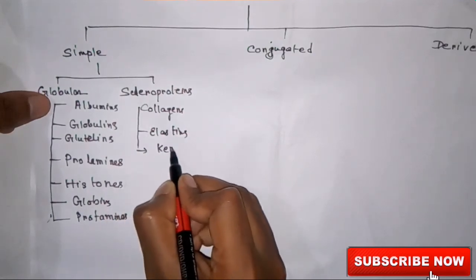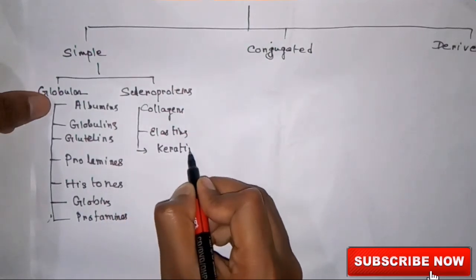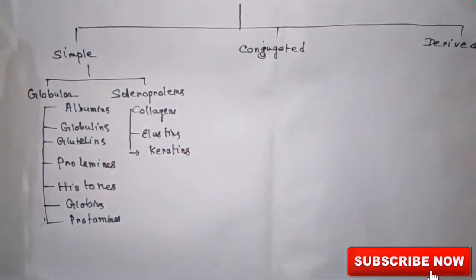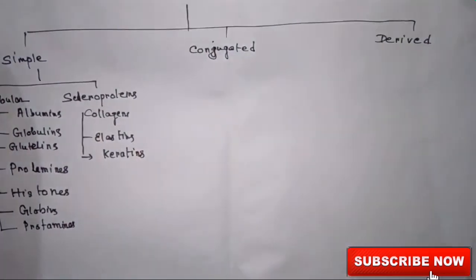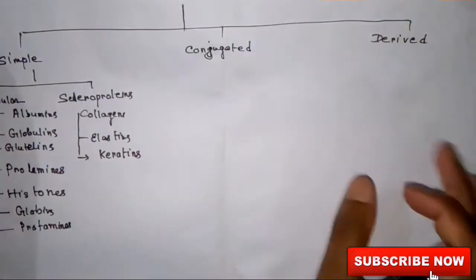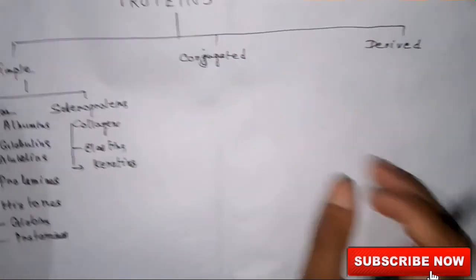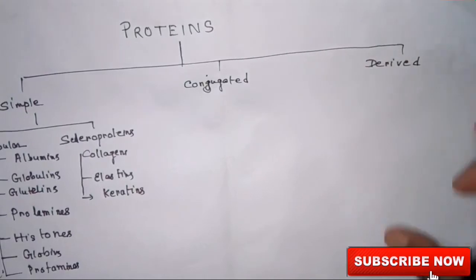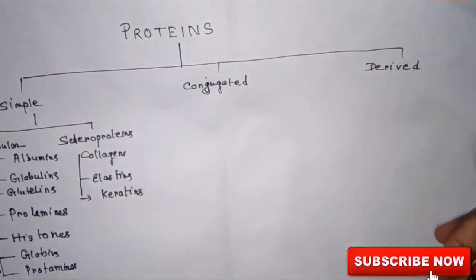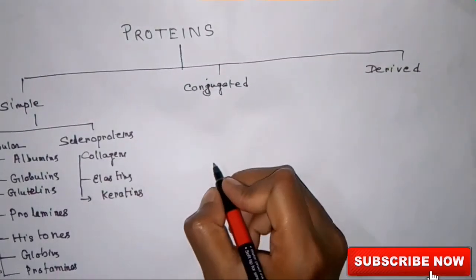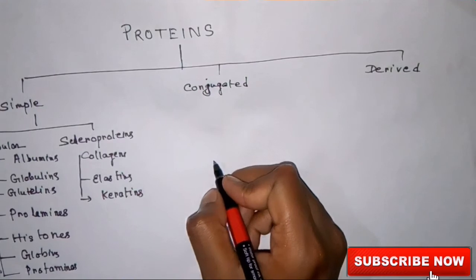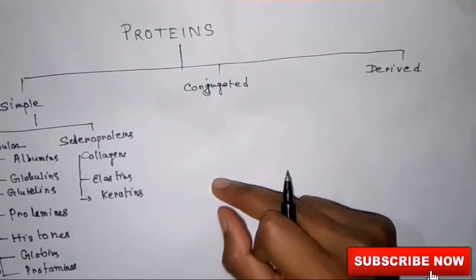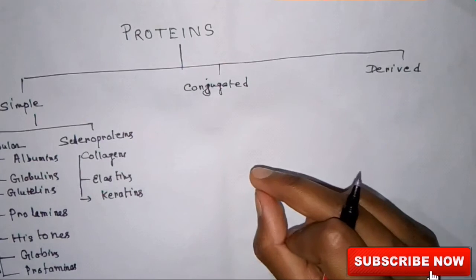These are simple proteins. Now, conjugated proteins are: nucleoproteins, glycoproteins, mucoproteins, lipoproteins, phosphoproteins, chromoproteins, and metalloproteins. These are the conjugated proteins.